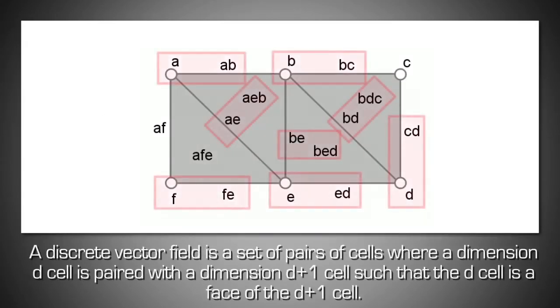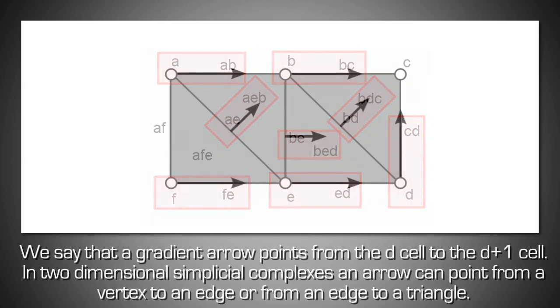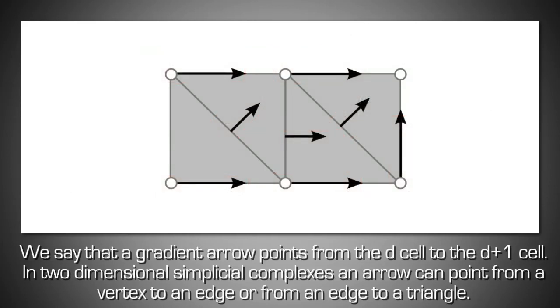A discrete vector field is a set of pairs of cells where a dimension d cell is paired with a dimension d+1 cell such that the d cell is a face of the d+1 cell. We say that a gradient arrow points from the d cell to the d+1 cell.